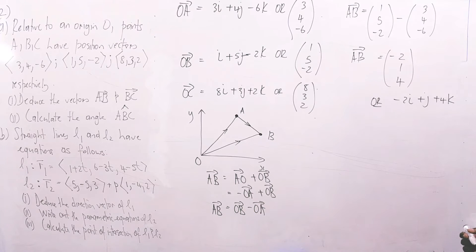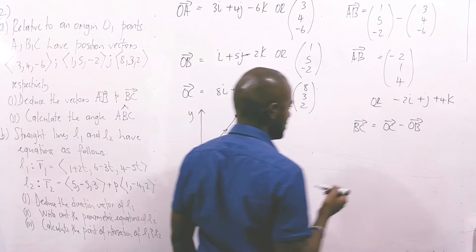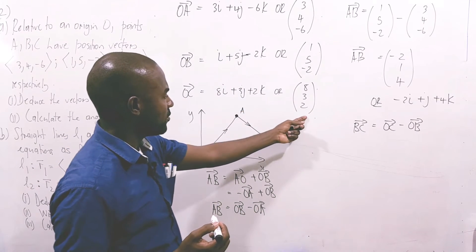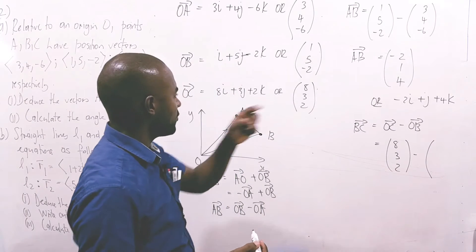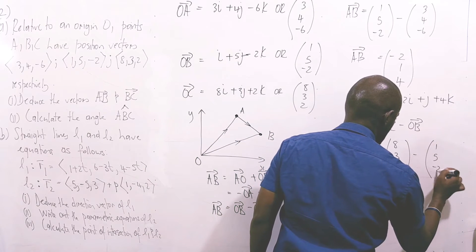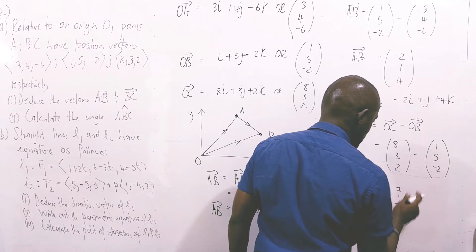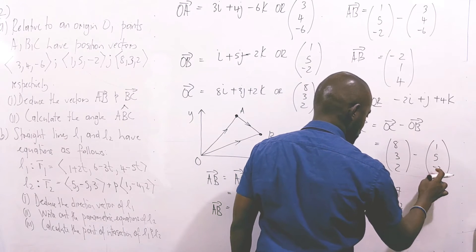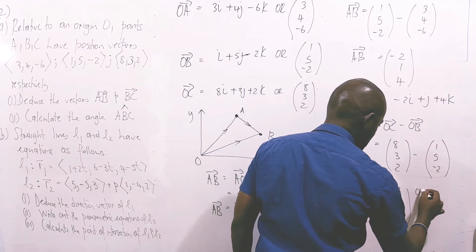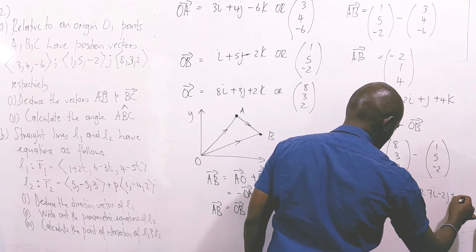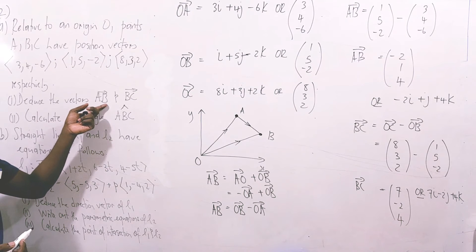For the second part, we find displacement vector BC. In similar fashion, BC = OC - OB. So BC = (8, 3, 2) - (1, 5, -2). Subtracting corresponding coefficients: 8 - 1 = 7; 3 - 5 = -2; 2 - (-2) = 4. So BC in column vector form is (7, -2, 4), or equivalently 7i - 2j + 4k. That completes part 1 of A — finding displacement vectors AB and BC.